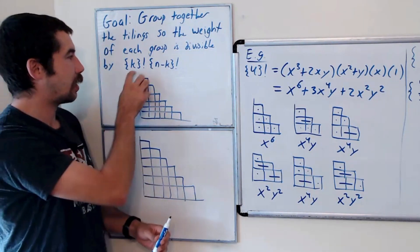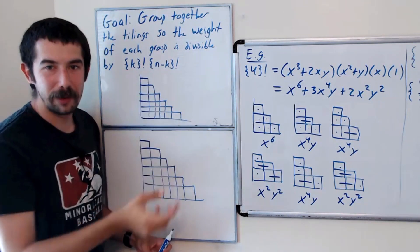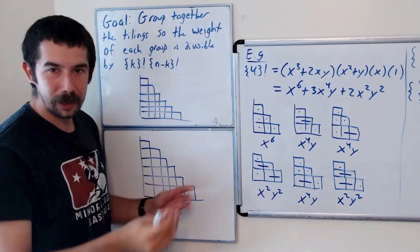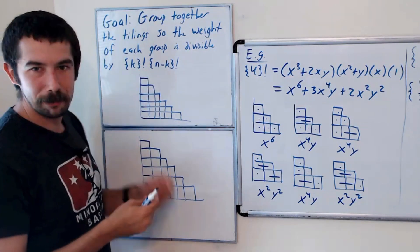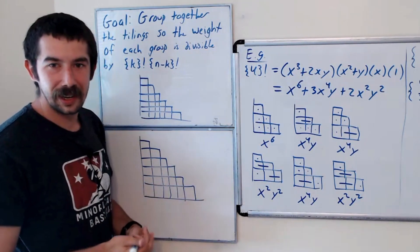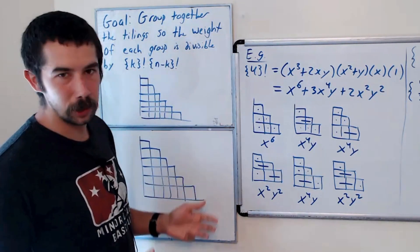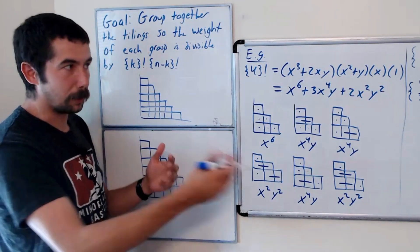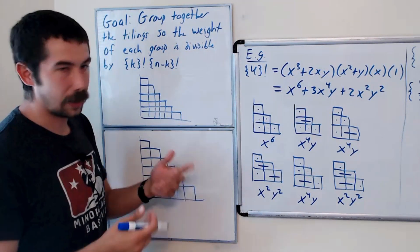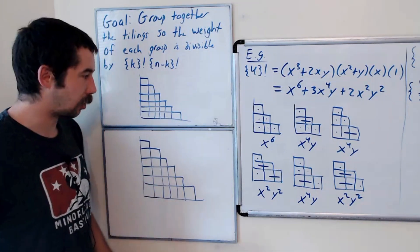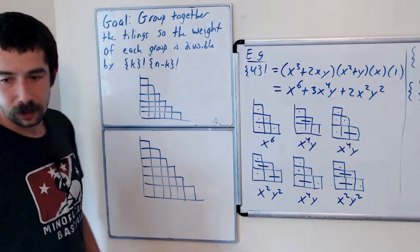So our goal is to show that this Lucas binomial is a polynomial in x and y with integer coefficients. The way we'll do this is by grouping together the tilings — grouping them in a way such that the weight of each group is divisible by this product, so we can factor out bracket k factorial and bracket n minus k factorial.